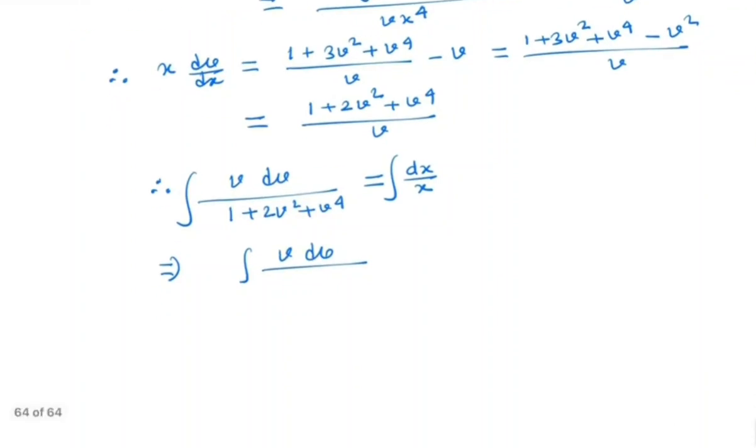So, we have v dv by, notice that the denominator term is 1 plus 2v² plus v⁴, which is nothing but (1 plus v²)². So, what we will do for the left-hand side integration, we will put 1 plus v² as p. So, we have 2v dv is equal to dp, which is v dv is equal to dp by 2.